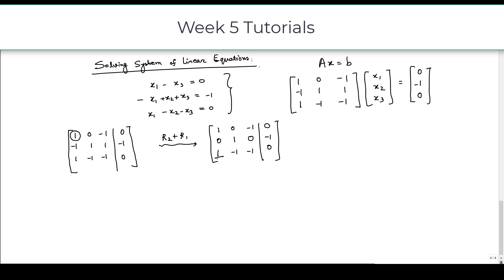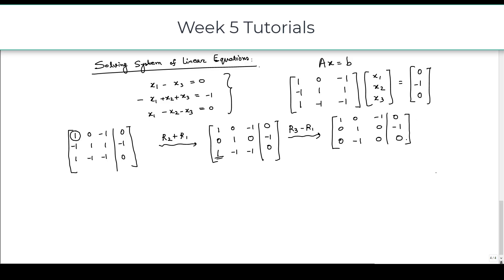Now we have to make the element in the third row and first column to be 0, so we do R3 minus R1. The first two rows remain the same, and the third row becomes 0, minus 1, 0, 0.